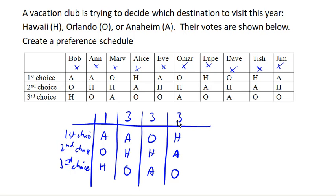The number of voters is listed across the top. If we have a preference schedule like this, we can always figure out the total number of voters by adding up the counts across the top — so 3 plus 3 plus 3 plus 1 equals 10 votes cast. And that's our preference schedule, which is going to be our starting point for analyzing voting.